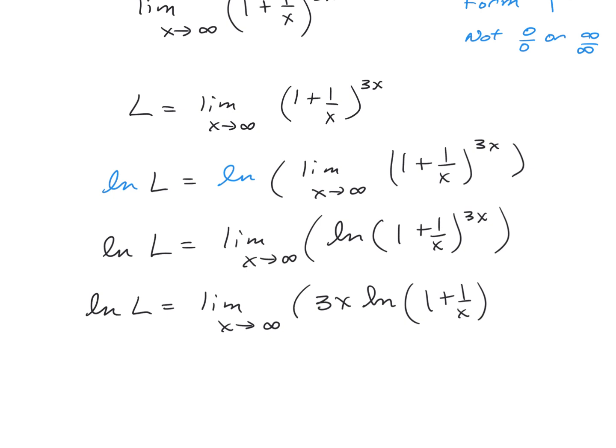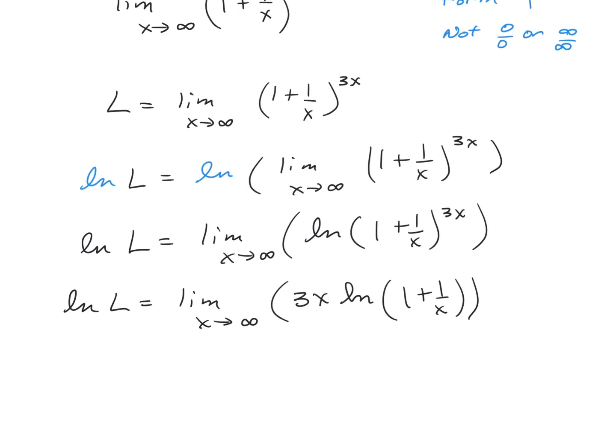At this point, it's a good idea to check the form of this limit. The form is going to be 3x, which is infinity, times the natural log of 1, which is 0. So we are not quite where we want to be, but we can algebraically rewrite this to hopefully obtain a form where we can apply L'Hôpital's rule.